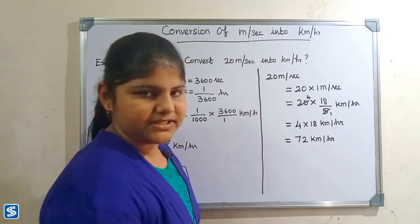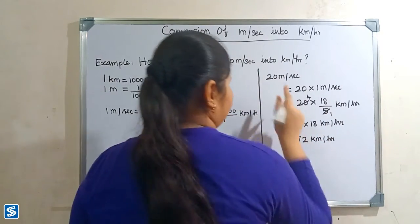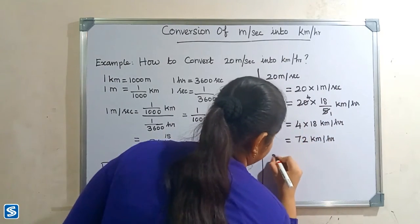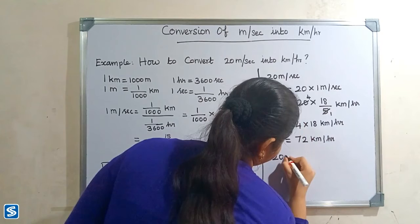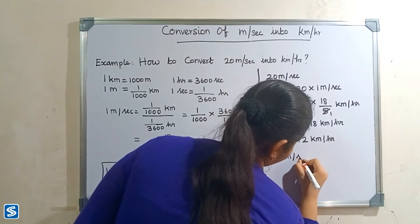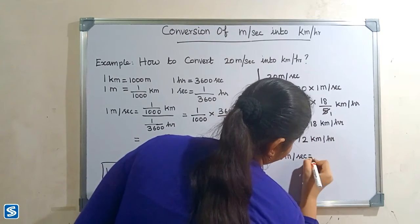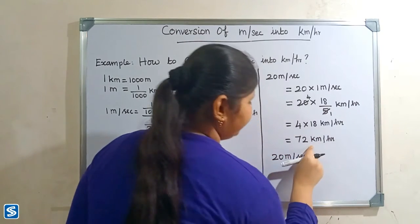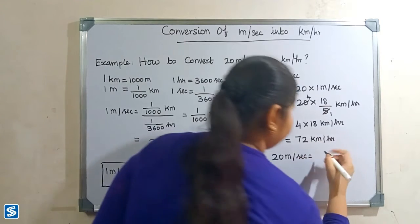So 4 multiply 18 kilometer per hour will be 72 kilometer per hour. So 20 meter per second is equal to 72 kilometer per hour.